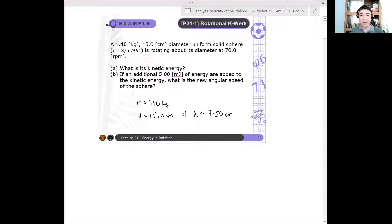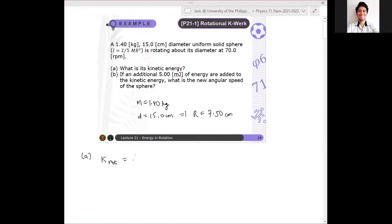So what's being asked for the first one is: what is the kinetic energy? Remember, there's no translation happening. We are assuming the solid sphere is not translating. Hence, we are only interested in determining the rotational kinetic energy of the sphere. So we have K rotational is just—what's the formula? One half, moment of inertia I, omega squared.